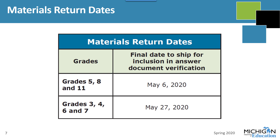Here are the deadlines to return secure materials to the scoring contractor: May 6 for grades 5, 8, and 11, and May 27 for grades 3, 4, 6, and 7. These dates are in the TAM on page 67 and are included in the Important Dates documents.